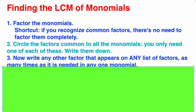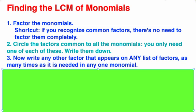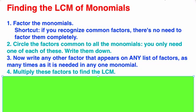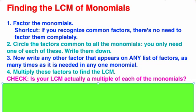Then you're going to write any other factor that appears as a factor in any of the other monomials. You're going to multiply all these factors together to find the least common multiple.